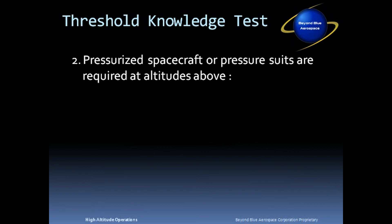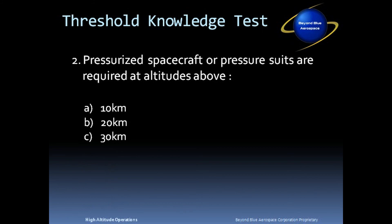Question number two. Pressurized spacecraft or pressure suits are required at altitudes above: A, 10 kilometers; B, 20 kilometers; C, 30 kilometers; or D, 40 kilometers. The answer is B, 20 kilometers.